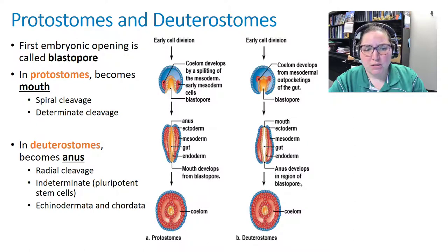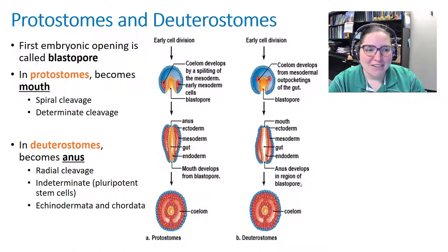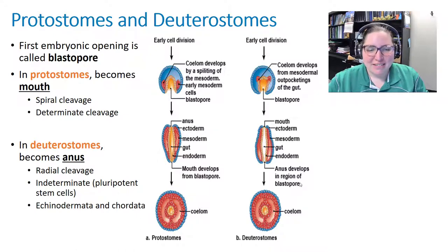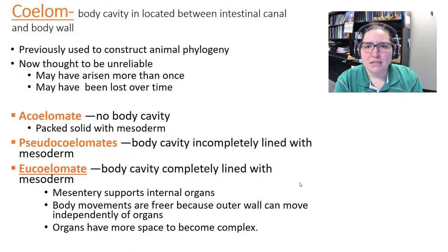A memory trick: deuterostomes — think 'doo-doo' and then anus. Echinodermata includes things like starfish and sea cucumbers; chordata includes us. That brings us to the coelom, a body cavity located between the intestinal canal and the body wall.